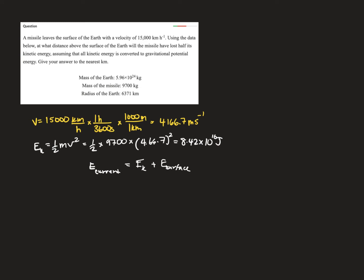So currently, then, we're at, remember, negative GMm over r is our equation for gravitational potential energy. And that's the radius we're looking for, plus this value here, which would be, we're told it's half of the original kinetic energy. So I'm writing 4.21 times 10 to the power of 10 here, half of this value here.